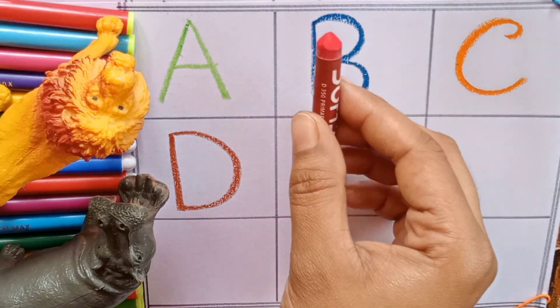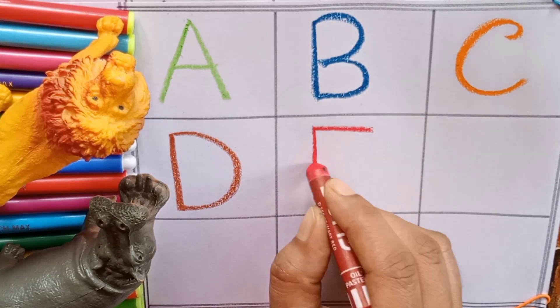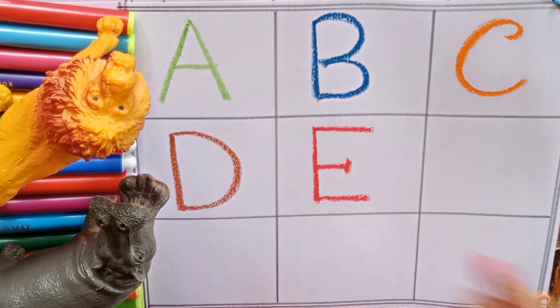Our fifth color is red. E. E for eagle. Eagle is a bird. E for also egg.